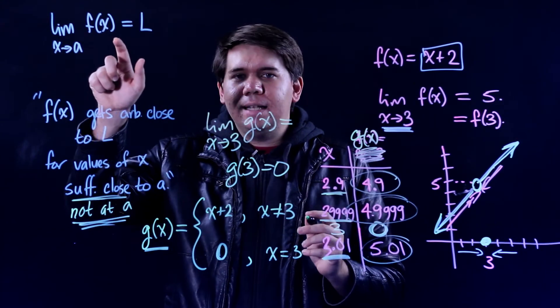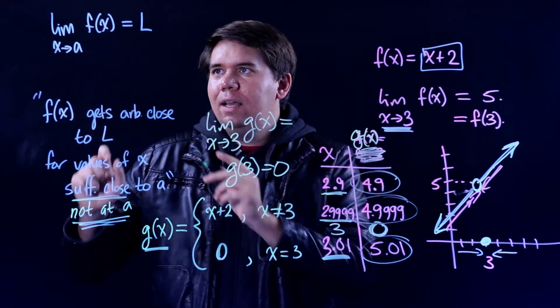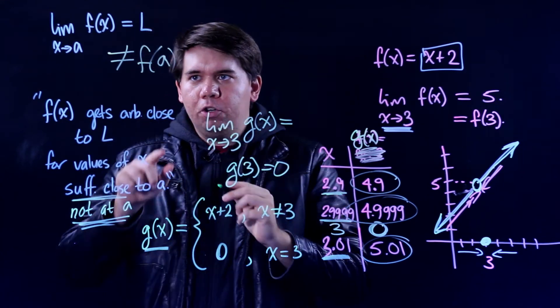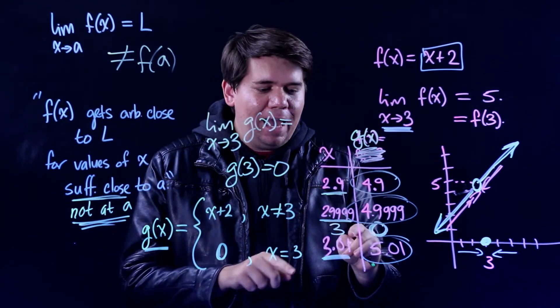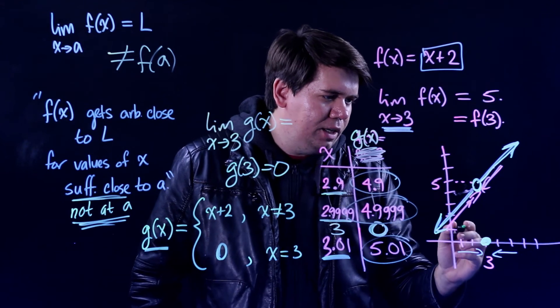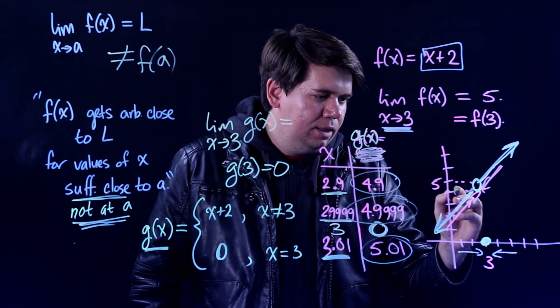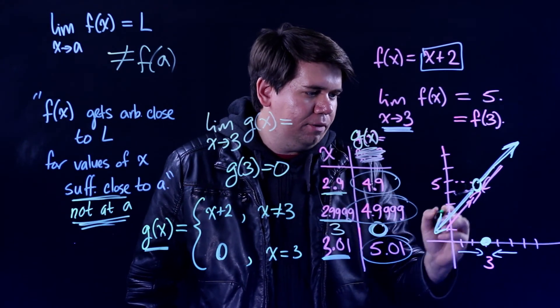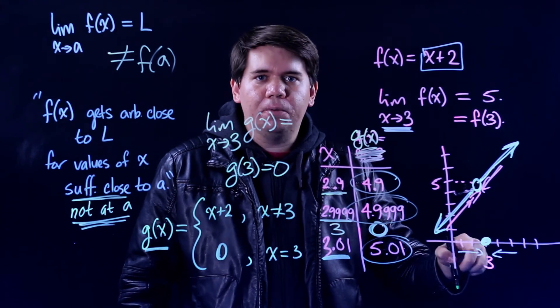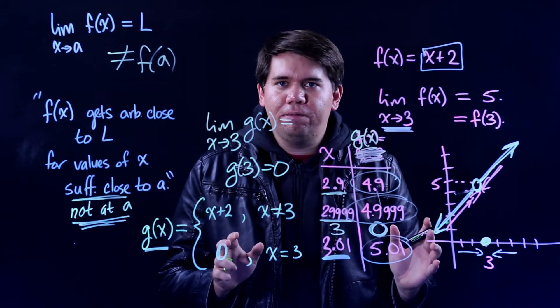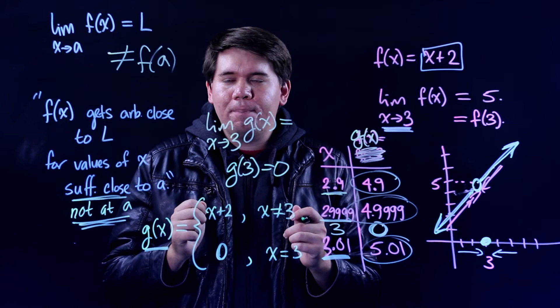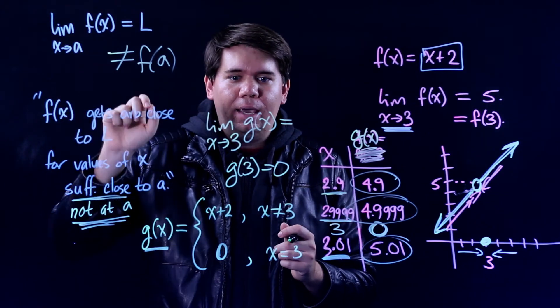The limit's not asking what happens at a. It's not in general asking what is f at a—it could be different. It's asking what happens when you're close to a. So whenever you're close to 3, you're going to get out things that are really close to 5, even though at 3 you're far off. At 3 you drop down. So that's a common point of confusion. The limit's not saying what happens at a—it's asking what happens as you approach a. At that point things can go crazy. It can be something totally different.